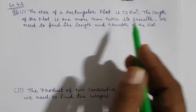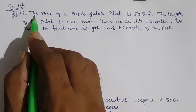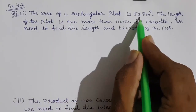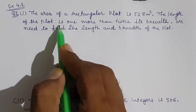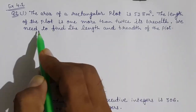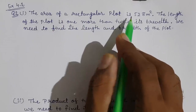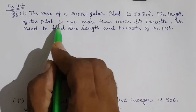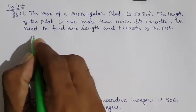Let us take Question Number 1: the area of a rectangular plot is 528 square meters. The length of the plot is one more than twice its breadth. We need to find the length and the breadth of the plot. So the area is 528 and the length is one more than twice its breadth.